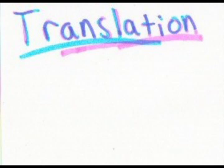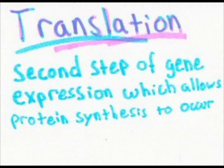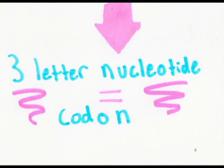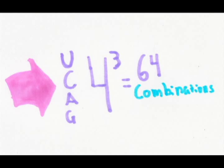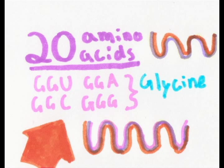Translation is the second step of gene expression which allows for protein synthesis to occur. The sequence of bases used for polypeptide production follows a triplet code where each 3-letter nucleotide is called a codon. There are 64 different possibilities for the codons, which is more than enough since there are only 20 amino acids.